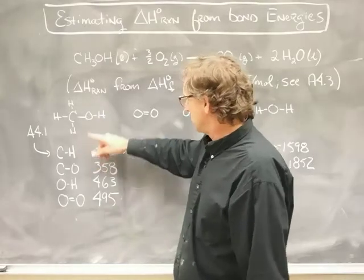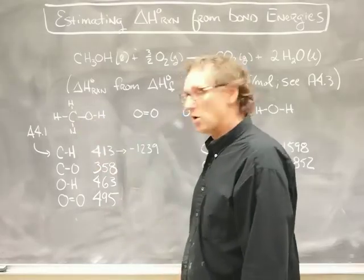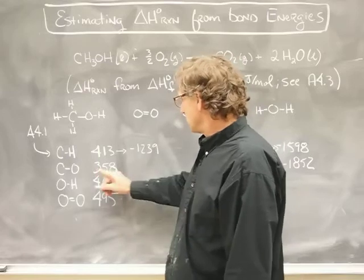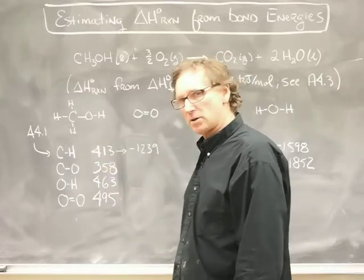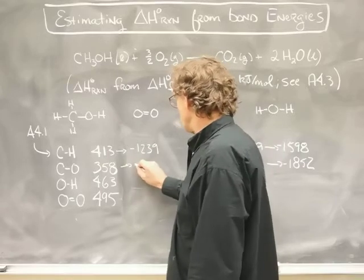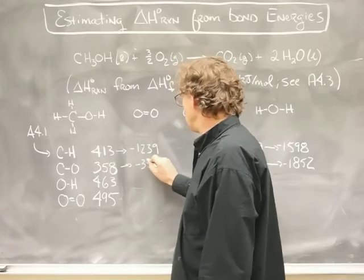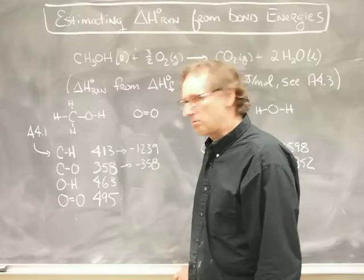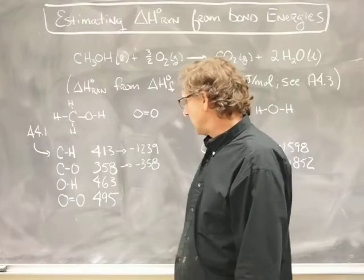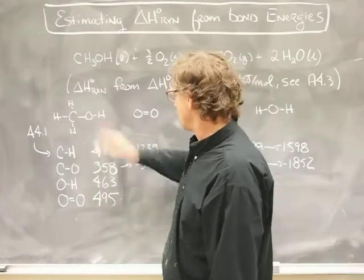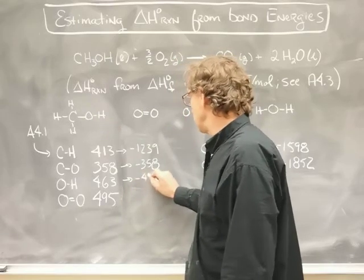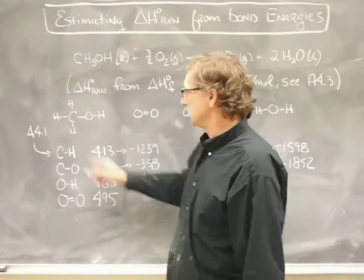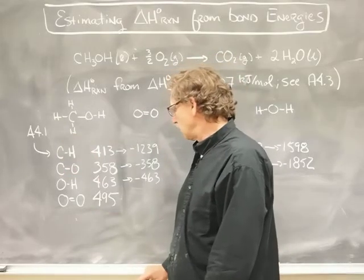We'll do the same thing here. There's one carbon-oxygen bond; table A4.1 gives 358 for the bond strength, so that comes to minus 358 kilojoules per mole bond energy. For the O-H, there's only one of those, so minus 463, once again using values of the bond strength in table A4.1.